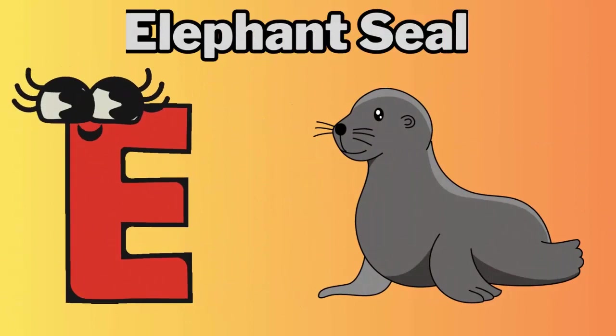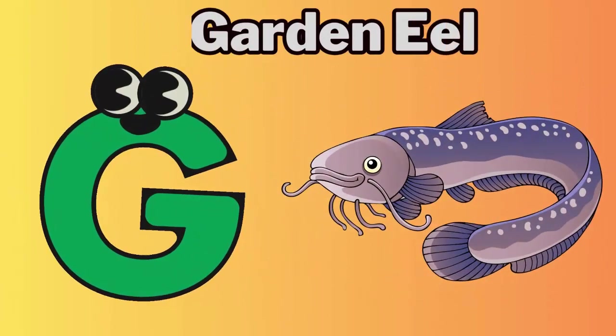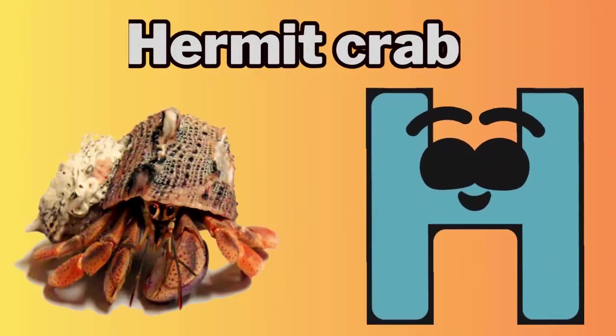E. E for elephant seal. F. F for flounder. G. G for garden eel. H. H for hermit crab.